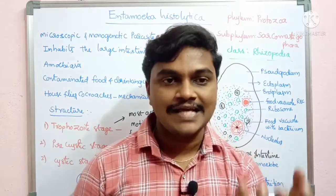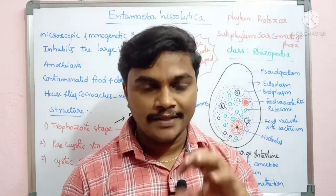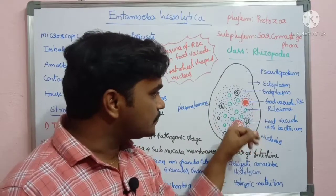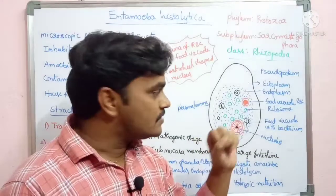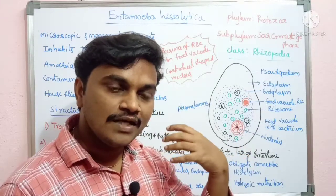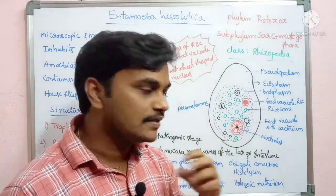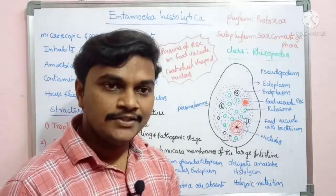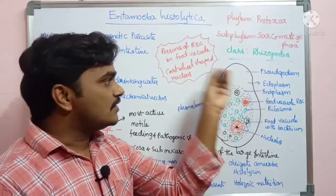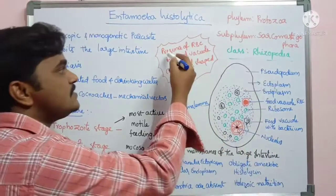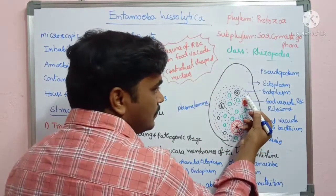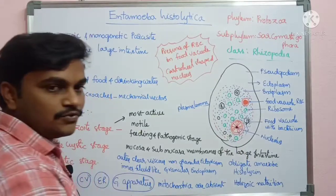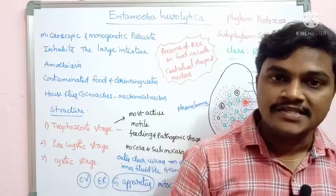The mode of nutrition is holozoic, meaning it takes solid food particles as food — engulfing solid particles. Food vacuoles are filled with bacteria and some are filled with RBCs. The presence of RBCs in food vacuoles and the cartwheel-shaped nucleus are the two prominent characters used to identify the trophozoite stage.